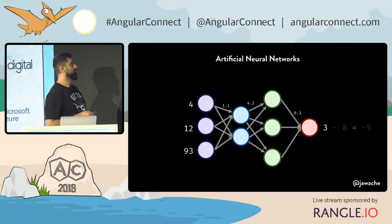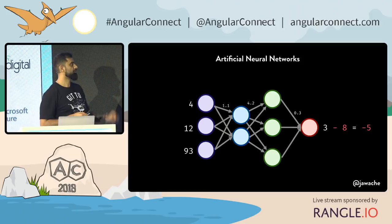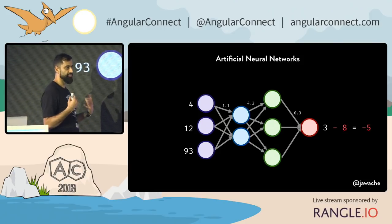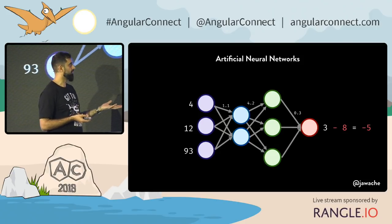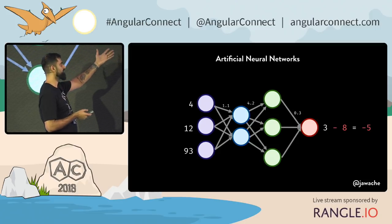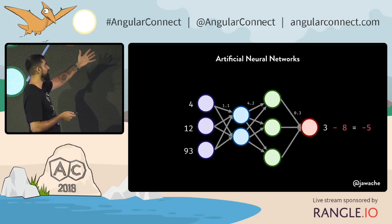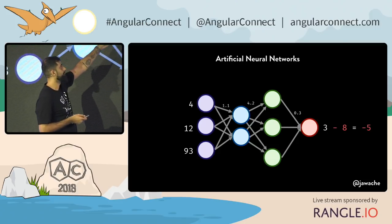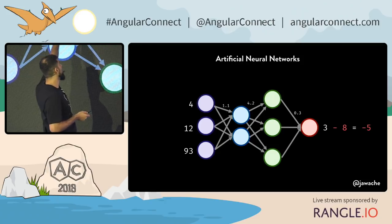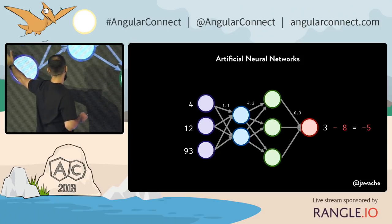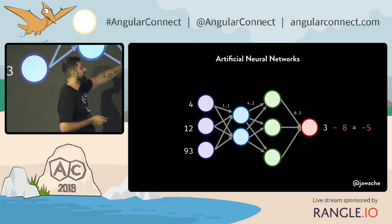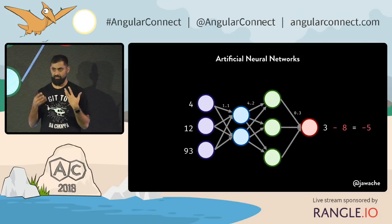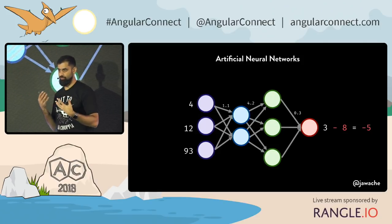I'm obviously very happy with this input picture. So I know the real number should be eight. I know it's off by five. Because of that, you need to change these weights — so that when you pump the numbers in again, it gives you eight. That's the goal.